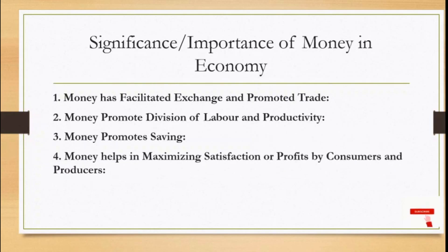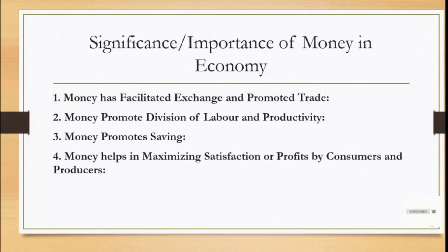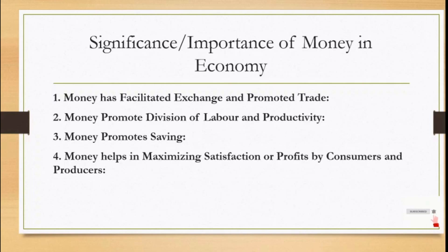Next point: money helps in maximizing satisfaction or profit for customers and producers. Money is of immense advantage to both consumers and producers. To consumers, money represents general purchasing power — he can buy anything with the help of money, and at the same time it is convenient to him. Since the value of goods are expressed in terms of a common measurement, that is money, the customer can easily compare the relative money prices of goods and the expected utilities from them.